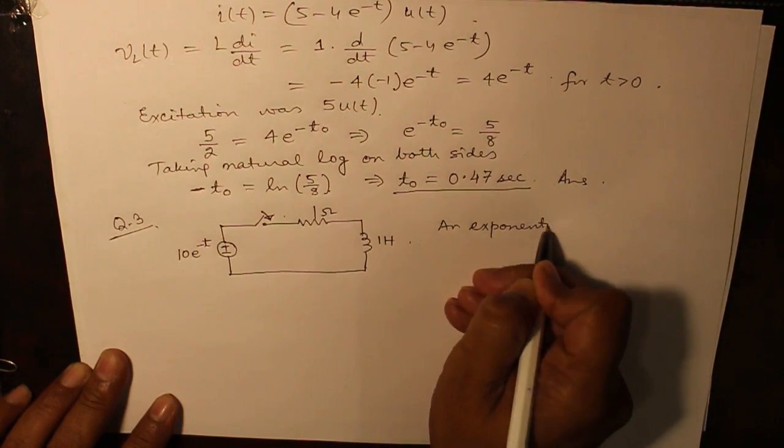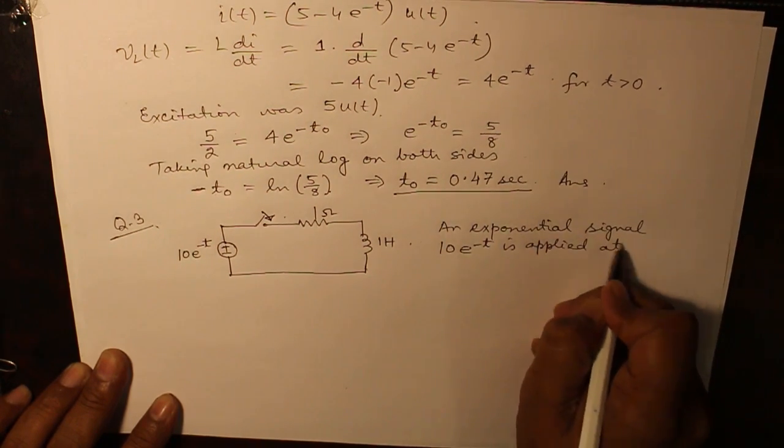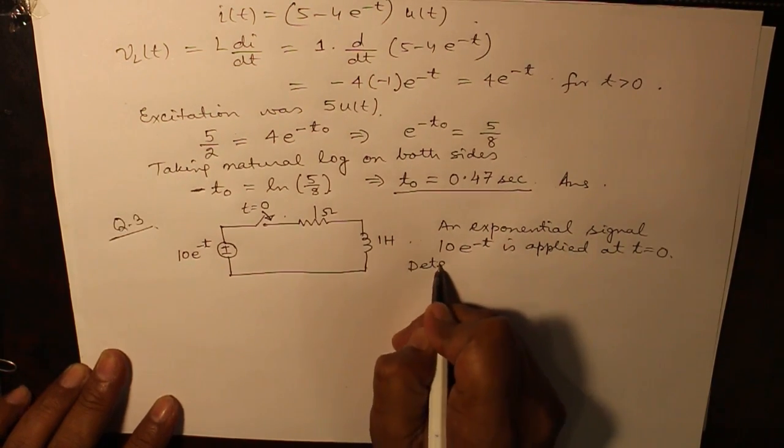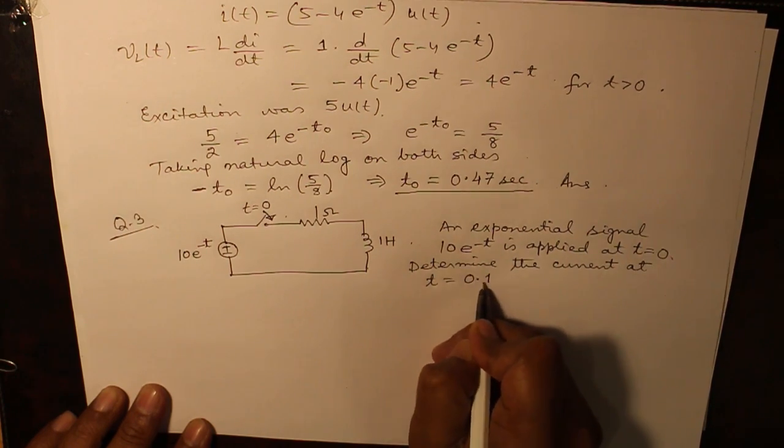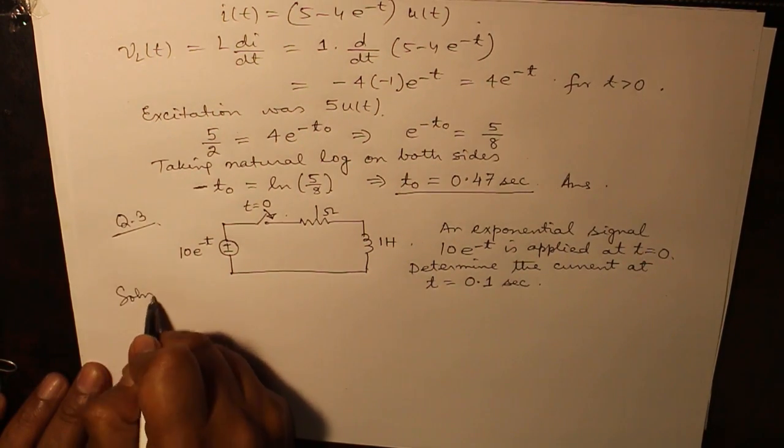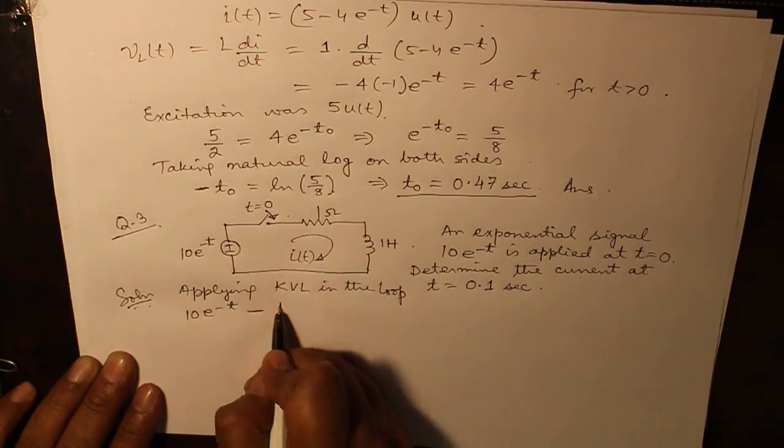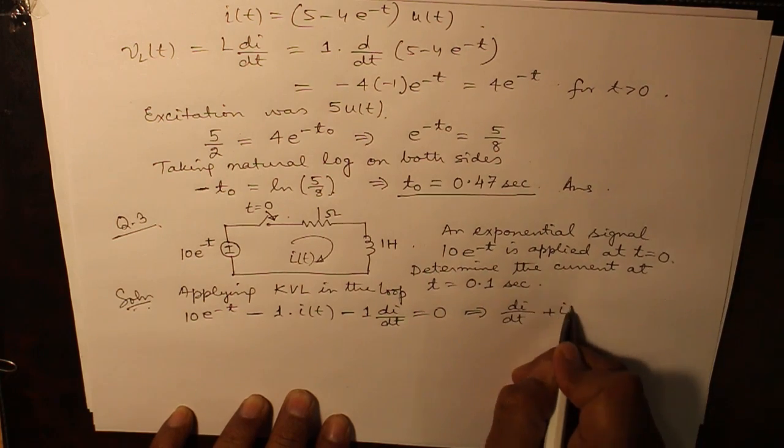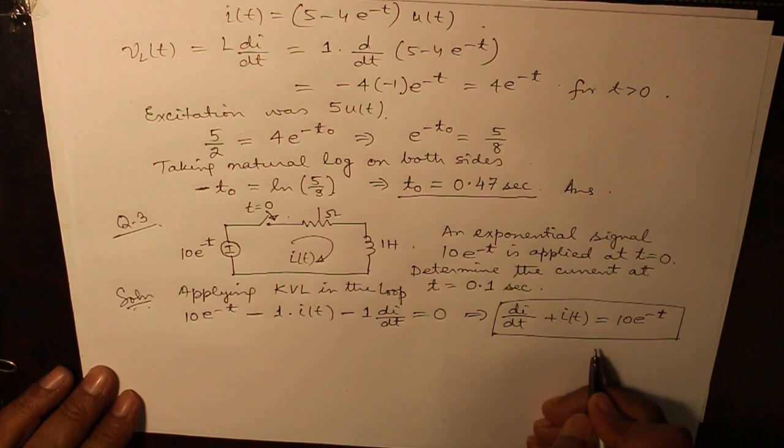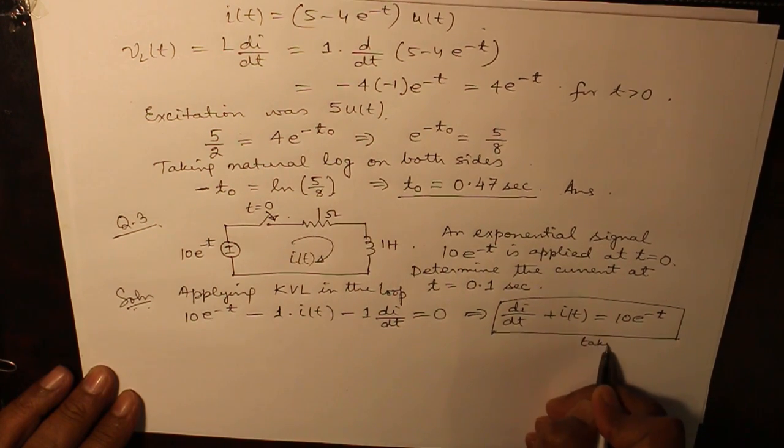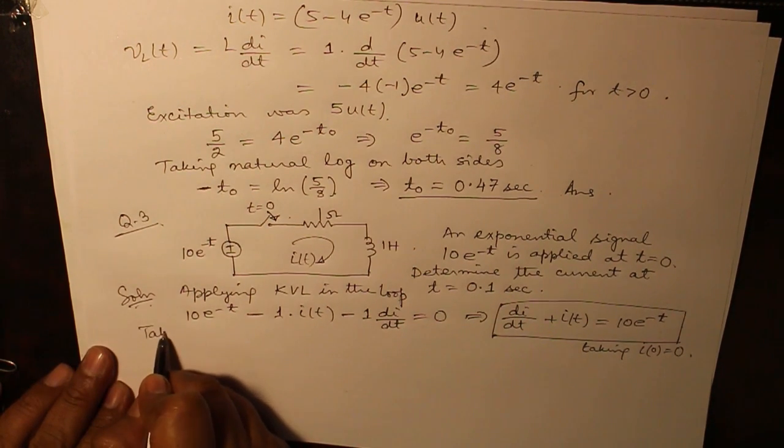An exponential signal 10 e raised to power minus t is applied at t equals 0. Determine the current at t equals 0.21 second. Applying KVL in the loop, this is your differential equation which has to be solved. Since initial condition has not been specified, we have to take i0 as 0.